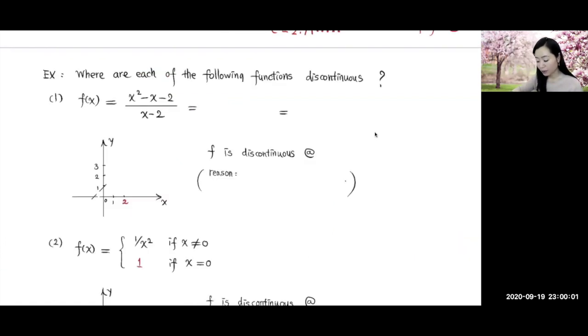Now we're going to do some examples to find where the following functions are discontinuous. The first one over here is a rational function. It is a polynomial divided by polynomial. That's what we call a rational function. Now the first thing to do here is let's try to factor the numerator and see if we can divide out some common factor.